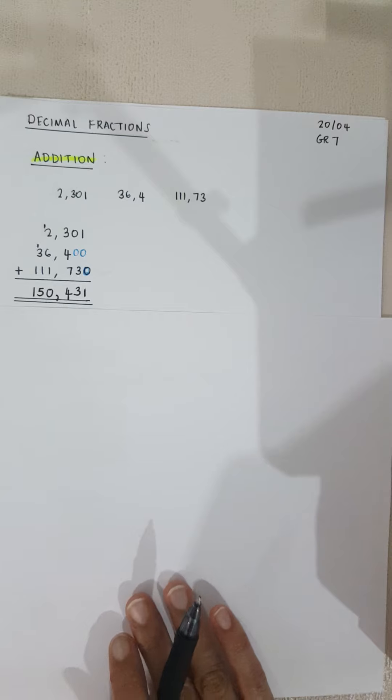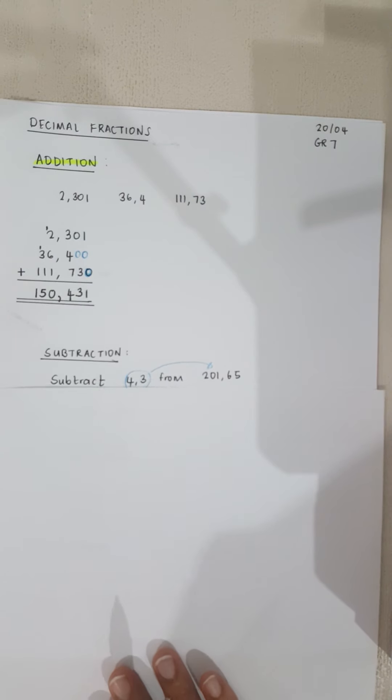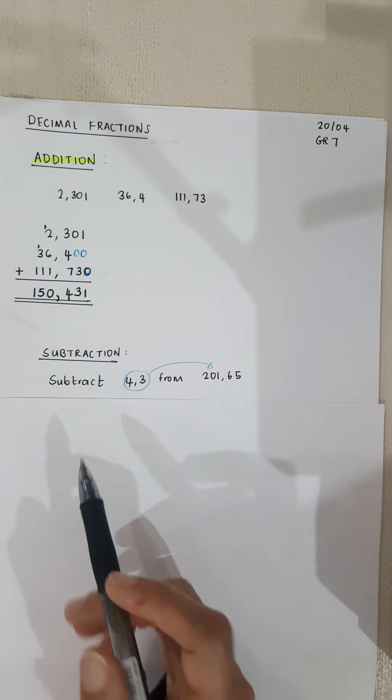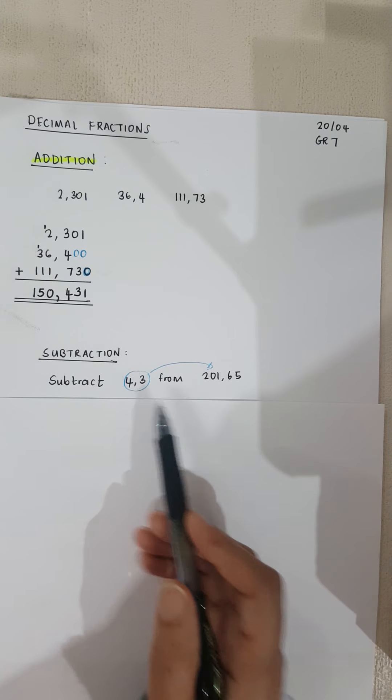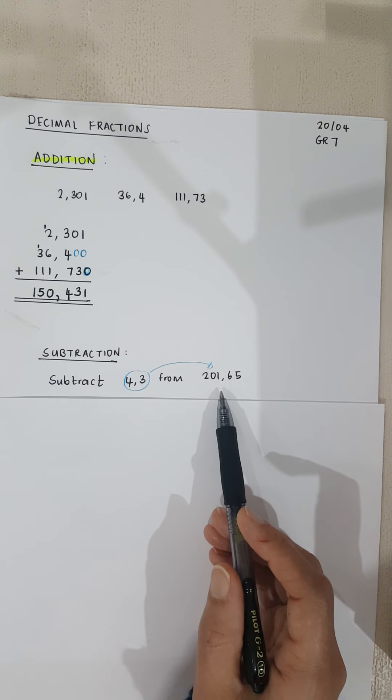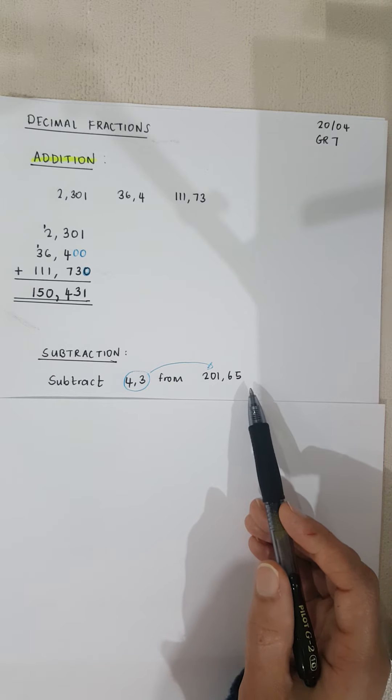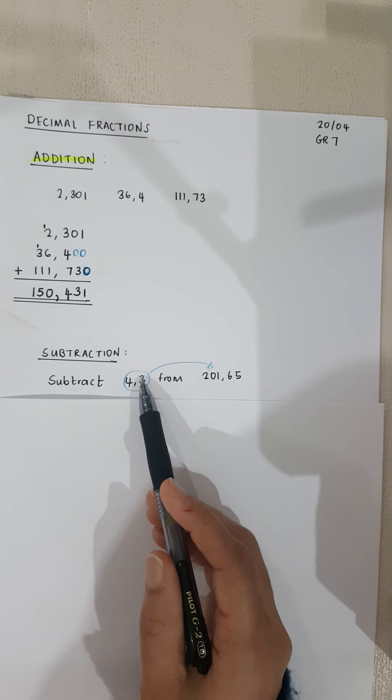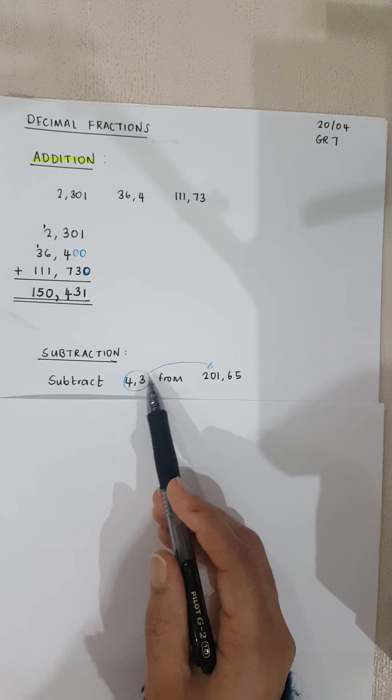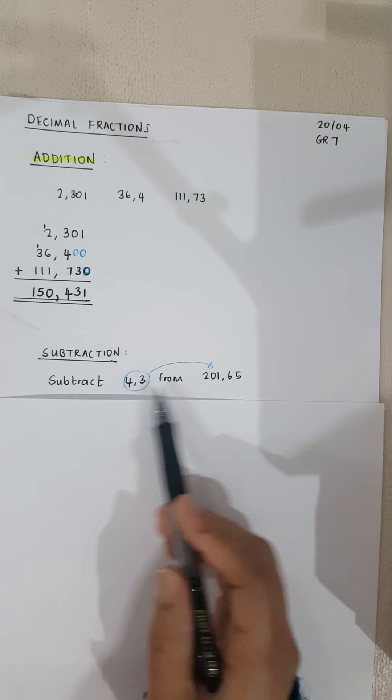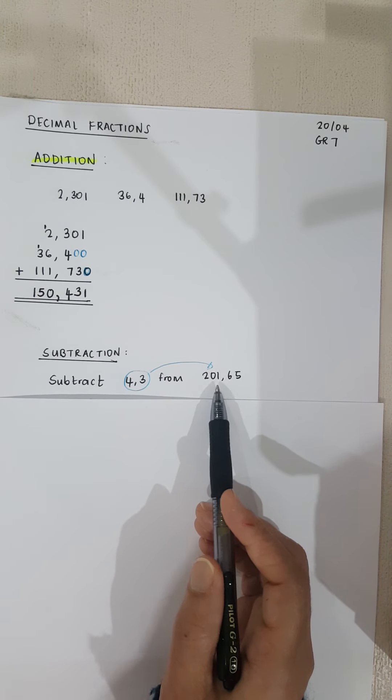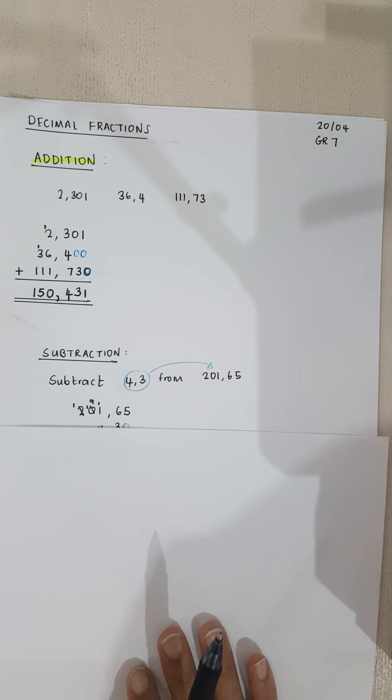Let's do subtraction now. This question is saying subtract 4.3 from 201.65. Remember, it's saying to take 4.3 and subtract it from that number. It's not saying 4.3 minus 201.65. So how do we write it down?